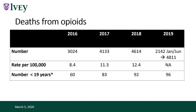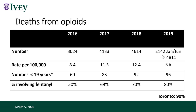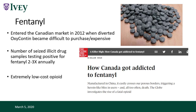This is not where the body of the opioid crisis is, but it's still significant. The story relates to fentanyl — we've seen an increase in the proportion of deaths involving fentanyl, and right now in Toronto, about 90% of opioid overdoses are related to fentanyl. Fentanyl entered the illicit market in 2012 as a diversion when OxyContin became difficult to purchase. The number of seized illicit samples testing positive for fentanyl has been increasing about 2 to 3% annually. It's extremely low cost — that's why it's cheap to put into counterfeit drugs — and it used to be a contaminant but is now increasingly becoming a drug of choice.